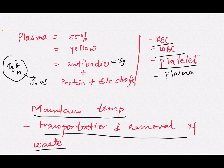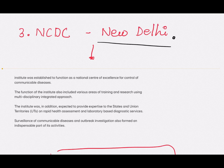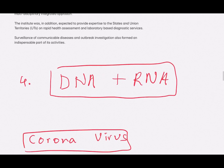The immunity provided through plasma therapy is known as passive immunity. The next organization you should know about is the National Centre for Disease Control (NCDC), based in New Delhi. It is a centre of excellence for controlling communicable diseases and provides expertise in surveillance, research, training of health personnel, and dealing with the outbreak of any epidemic.